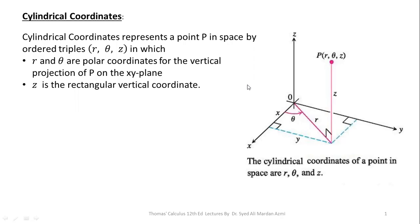Cylindrical coordinates represent a point in space by the ordered triple R, theta, and Z, in which R and theta are polar coordinates for the vertical projection of point P on the XY plane, and Z is the rectangular vertical coordinate. Cylindrical coordinate is the extension of polar coordinates R and theta in a two-dimensional plane.